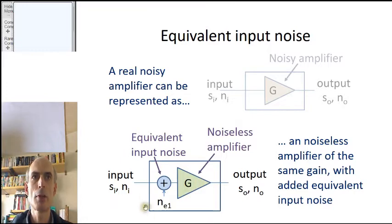This equivalent input noise is how most amplifiers are specified. It's exactly the same idea that we saw in the op-amp noise model in a previous video.